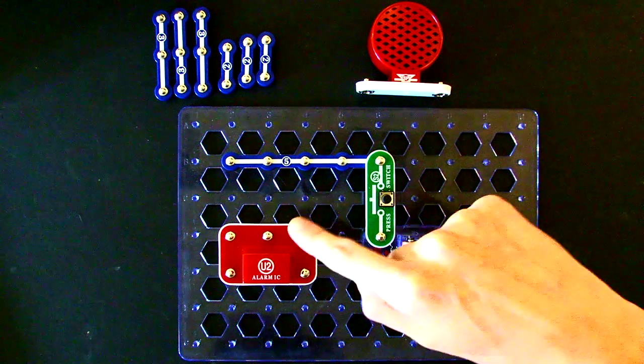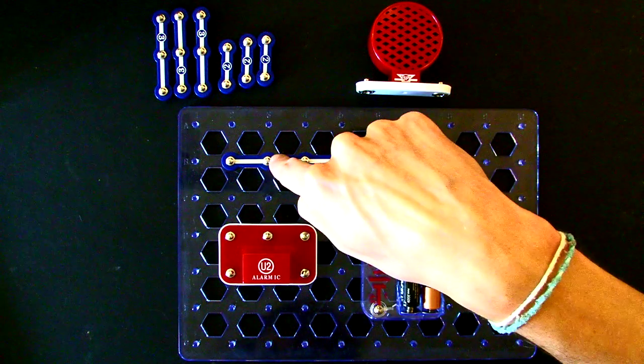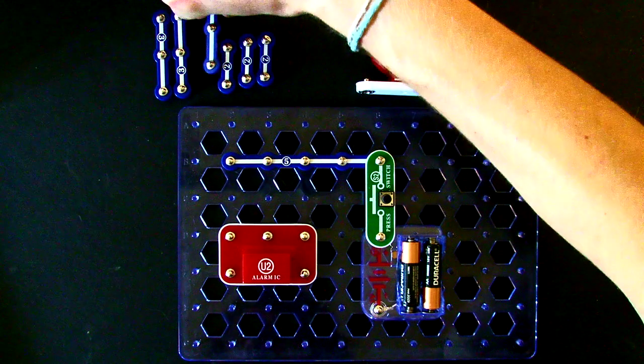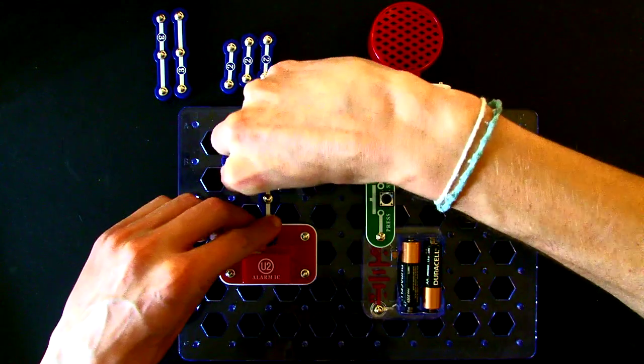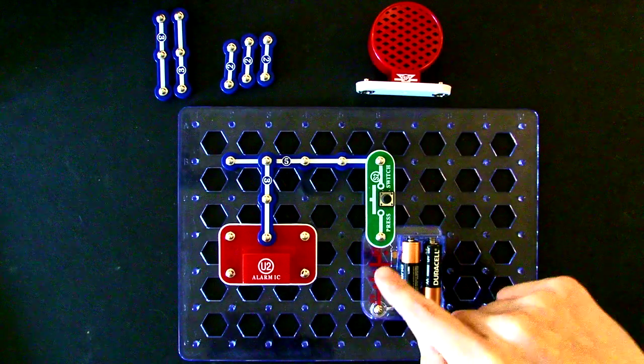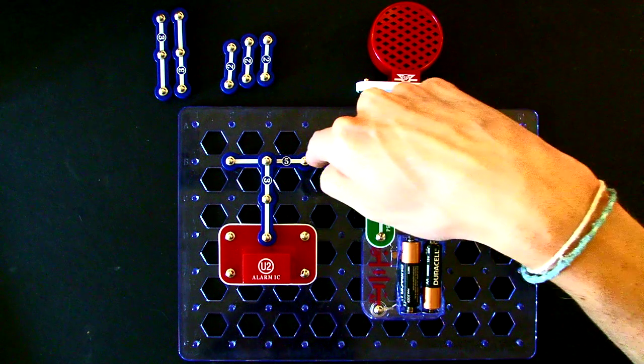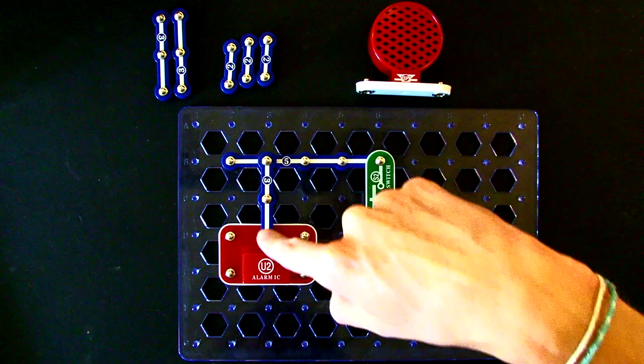Now, we want to supply positive electricity to this integrated circuit. So I'll take one of these three snap wires and attach it there. So positive electricity flows out of the battery, through these wires, and into this circuit.